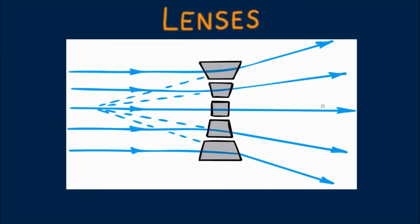No deviation occurs exactly in the middle, for in that region the glass faces are parallel to each other, like light passing through window pane.